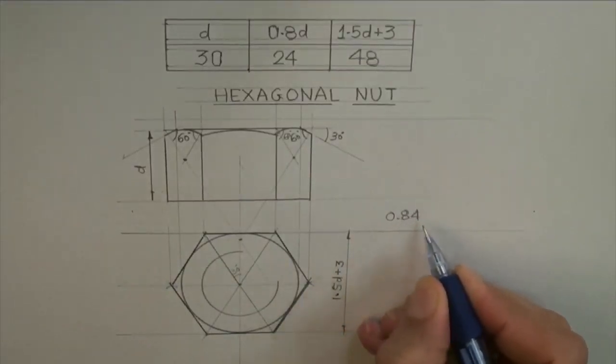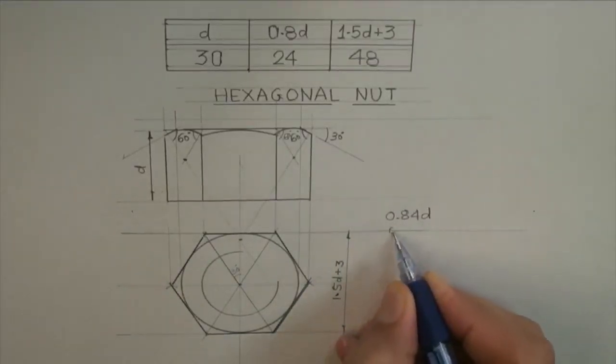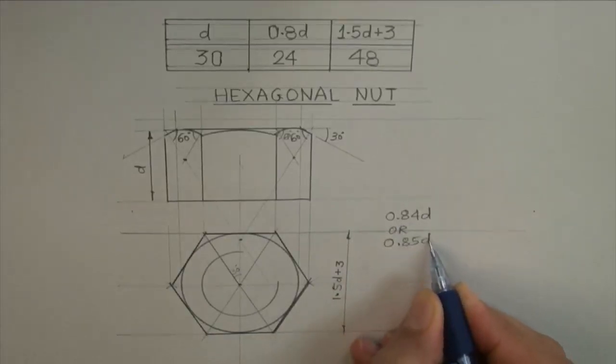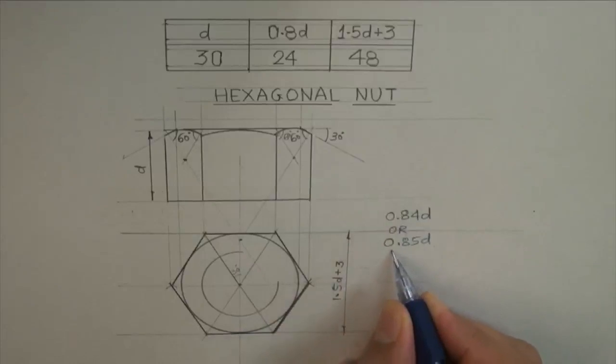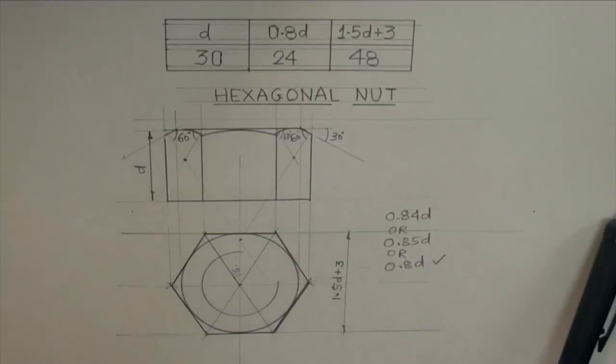See, I can take 0.84D also, 0.85 also or 0.8D, so I will go with 0.8D.